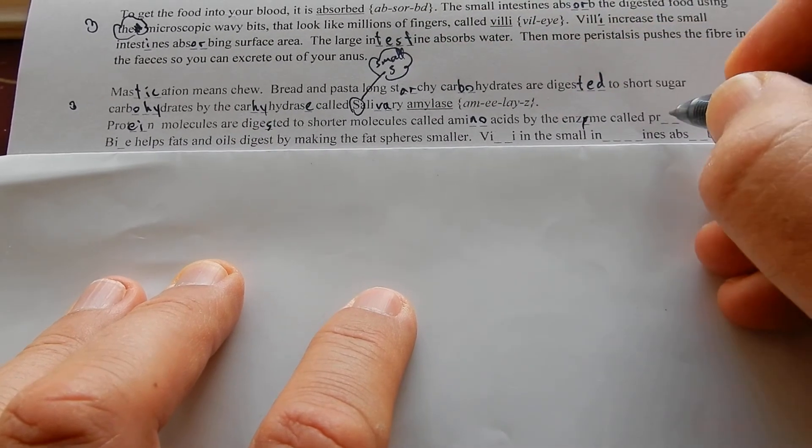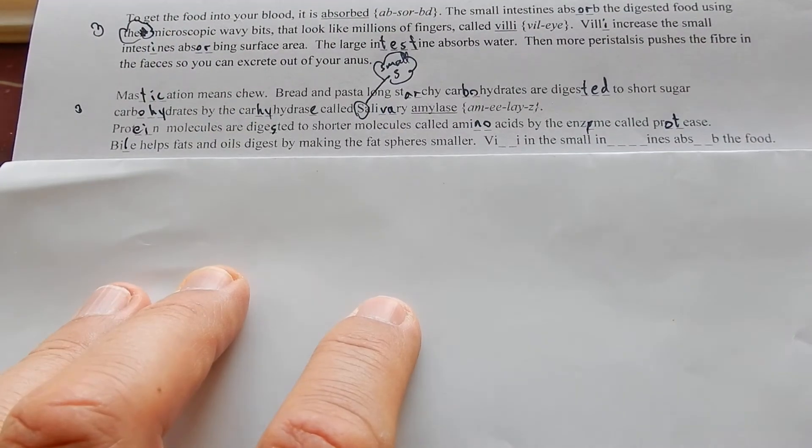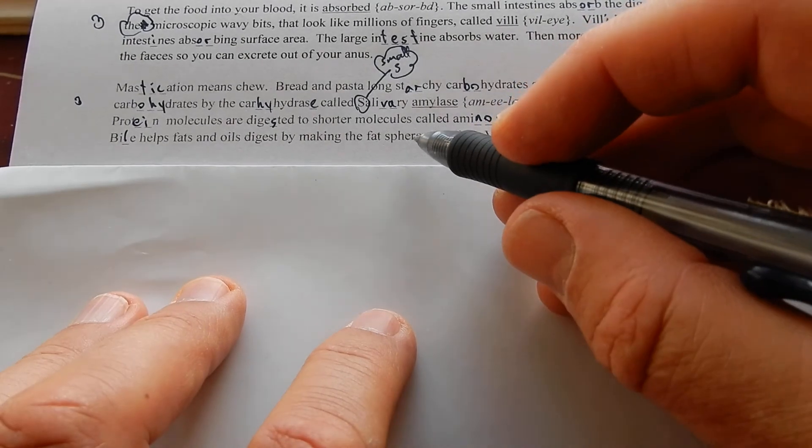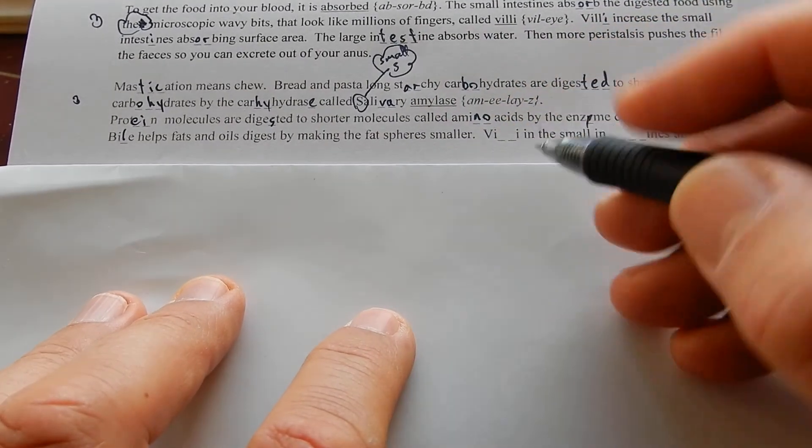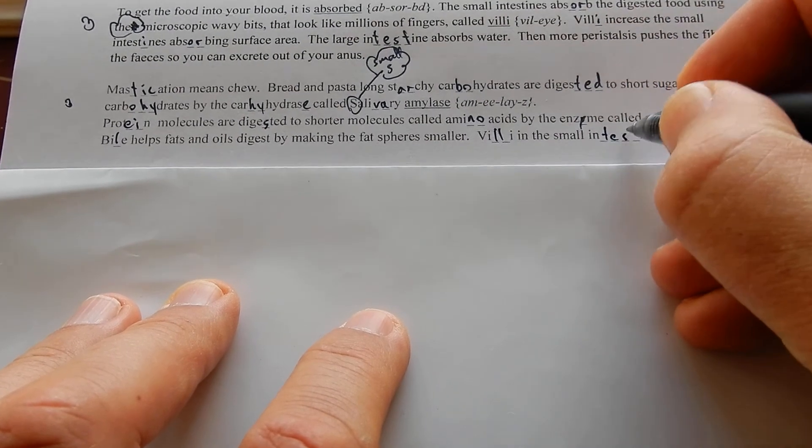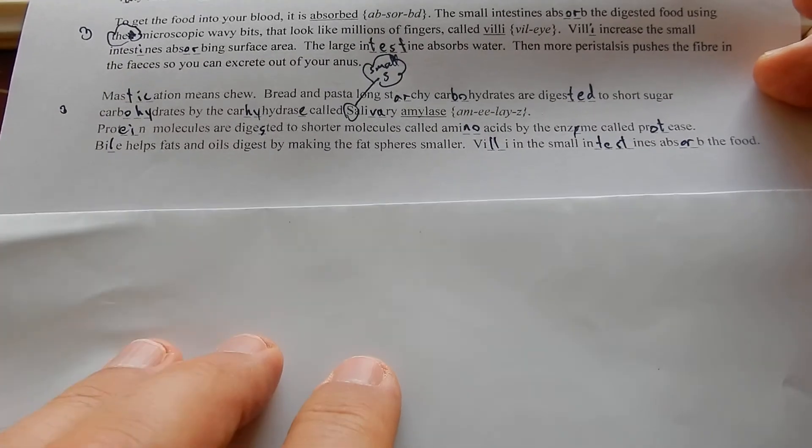Bile helps fats and oils digested by making the fat spheres smaller. Villi in the small intestines absorb the food.